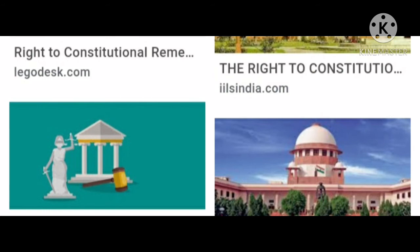There are a total of five types of writs. The first is habeas corpus, which means protection from unlawful arrest and detention. No one can arrest you without any reason and put you in prison - that is habeas corpus.